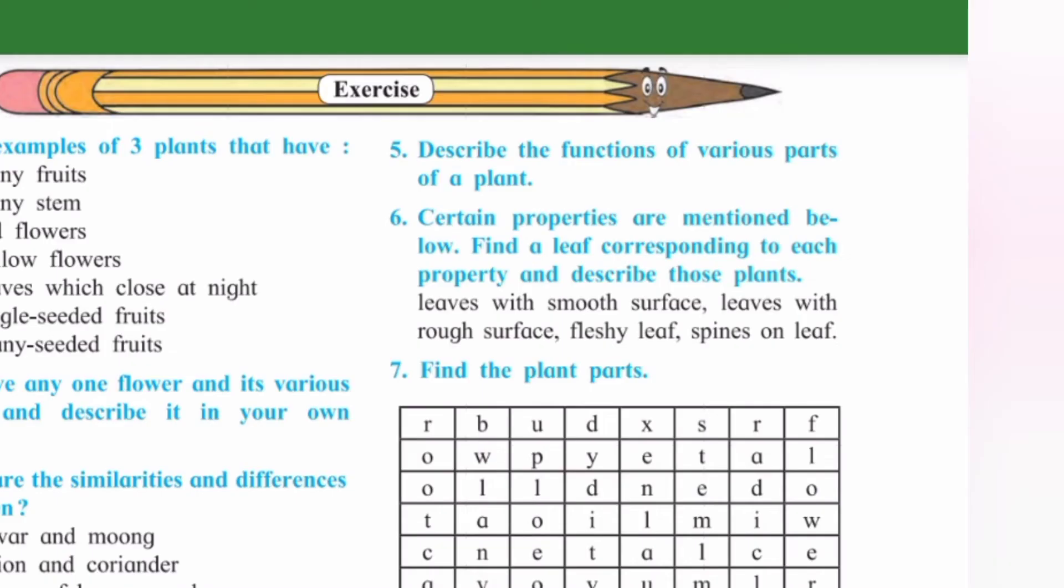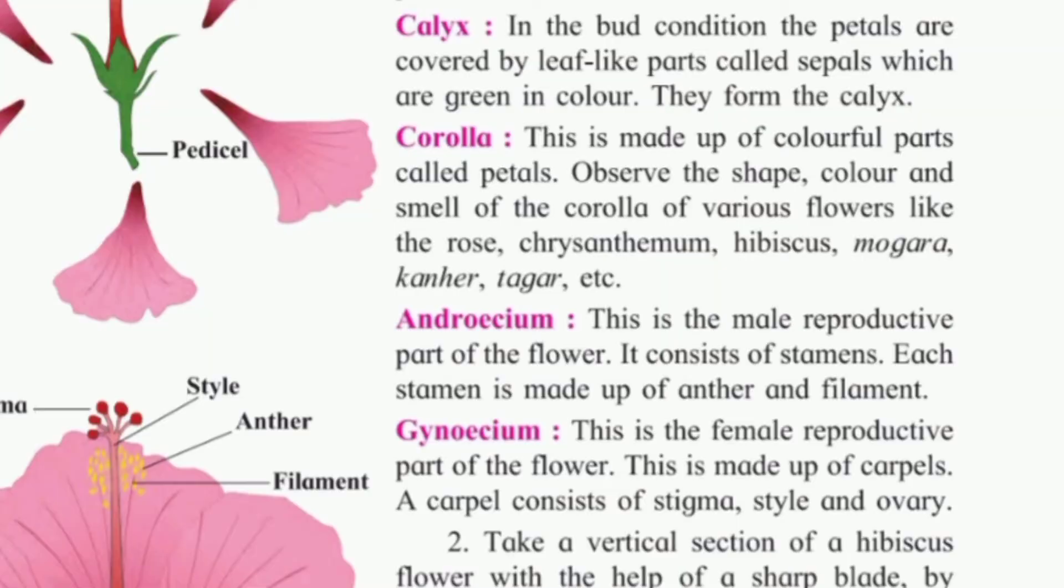Question number 5: Describe the functions of various parts of a plant. Answer is there on page number 14: calyx, corolla, androecium, gynoecium. You have to write all paragraphs.